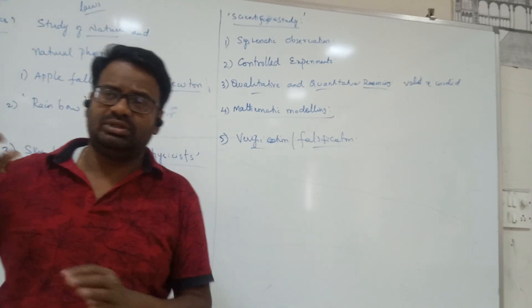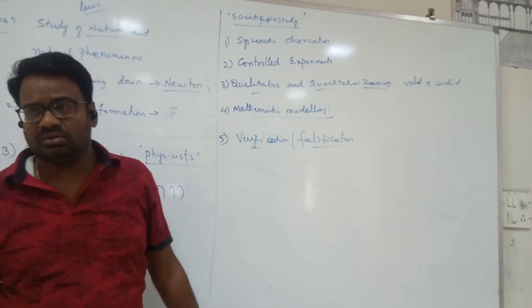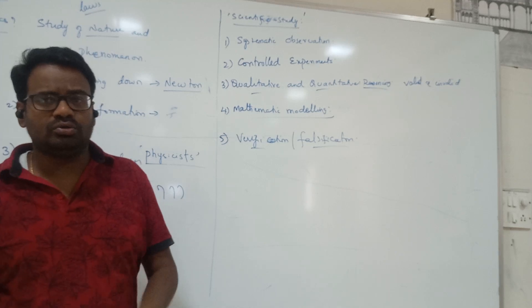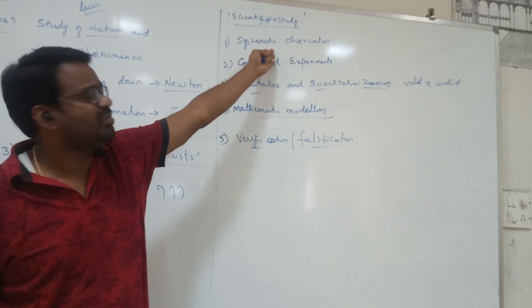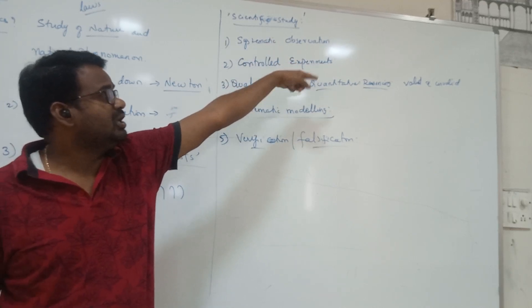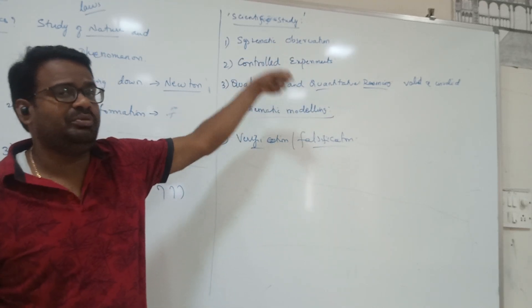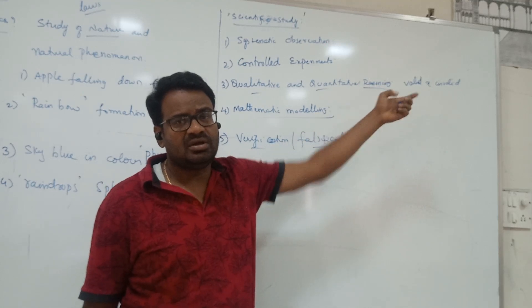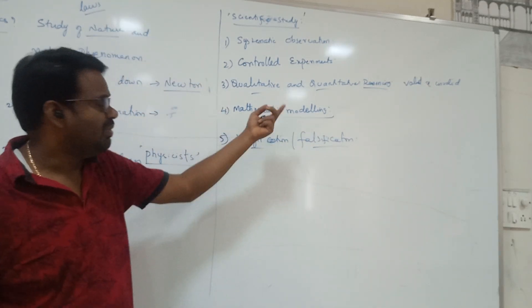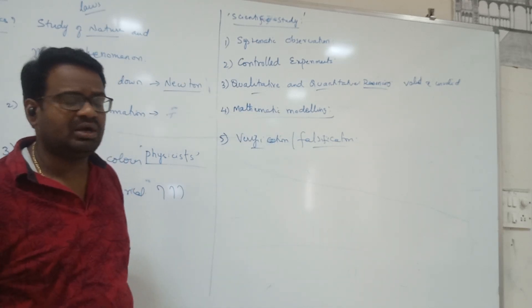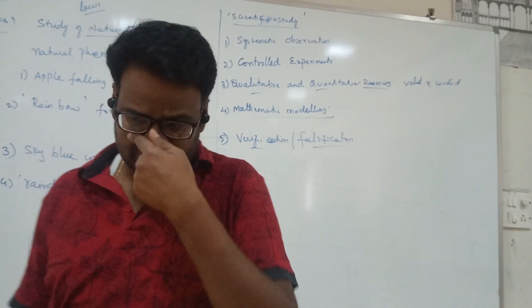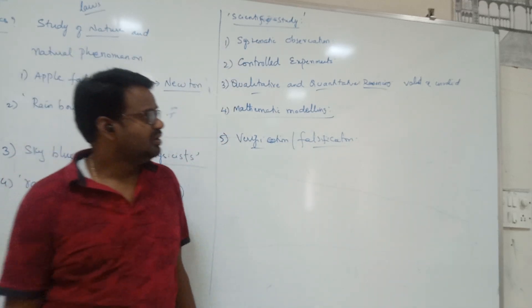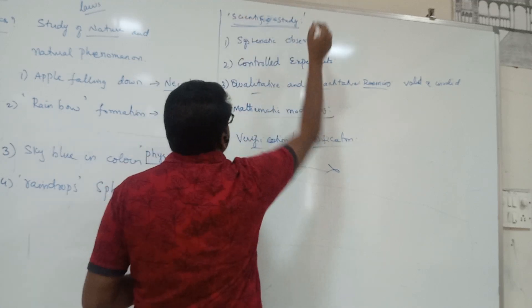Various things are to be followed. Even now, if you are in the state of converting into a scientist and want to do some research, you have to follow all these steps: first, study systematically; do experiments repeatedly — controlled means checking again and again; assess qualitative and quantitative validity; apply mathematical modeling; and verify how much truth there is. All five points together are what we call scientific study.